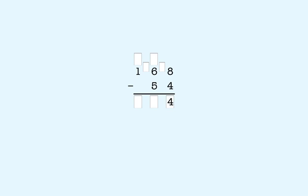Next, we subtract in the tens place. 6 minus 5 is 1, so we put a 1 in the tens place of the answer. Last, we subtract in the hundreds place. There is no digit in the hundreds place in the bottom number. That's the same as subtracting 0, so we bring down the 1. The answer is 114.